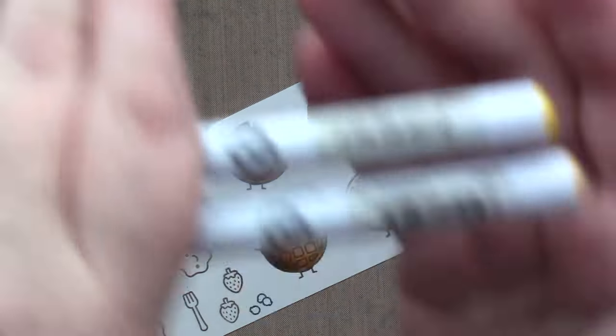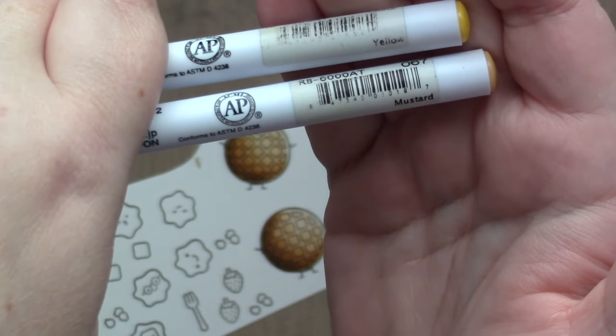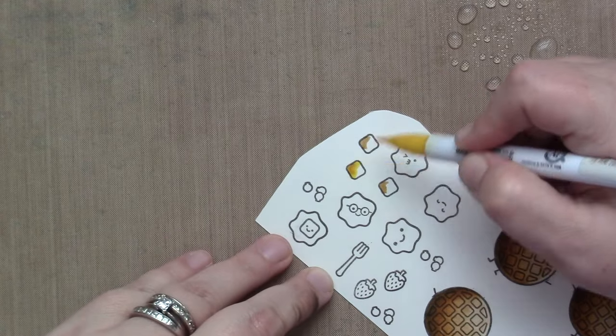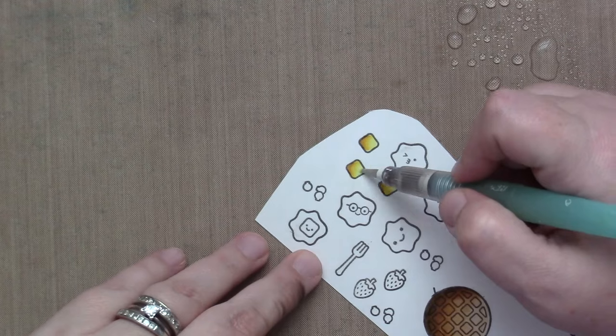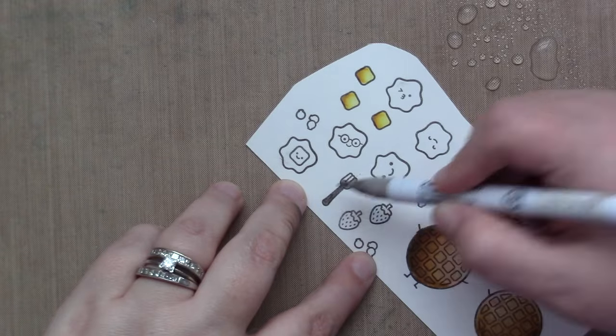Next up I am coloring the butter with yellow and mustard, just using a tiny bit of mustard in the corner of the butter and then a little bit of yellow, and then my water brush to pull it all out. Super easy, these images are very tiny.